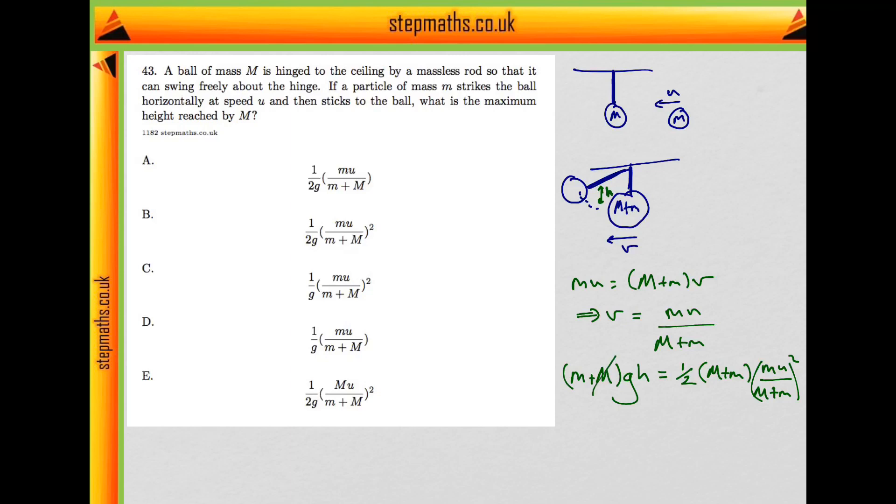If we cancel off here and divide through by g, this tells us the height it's going to reach, h, will be one over two g times mu over capital M plus little m all squared.